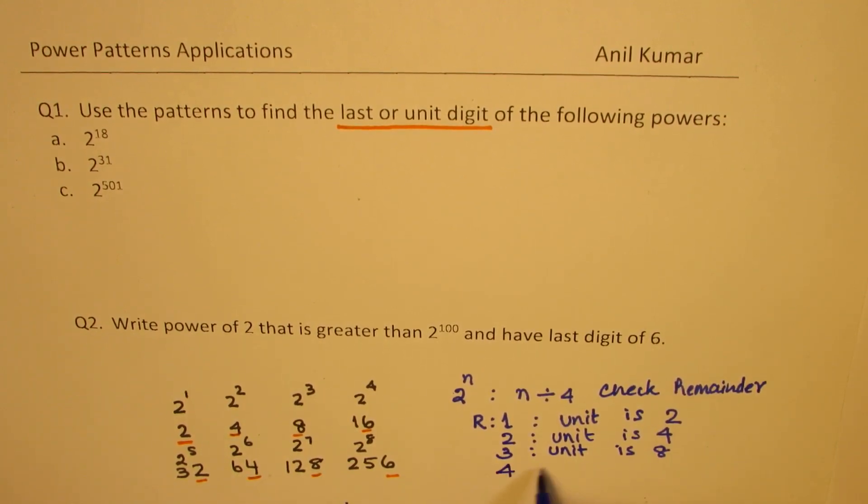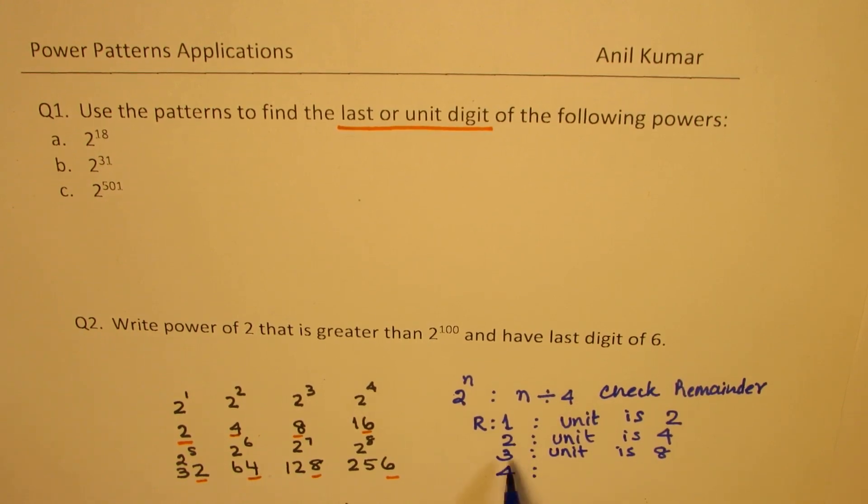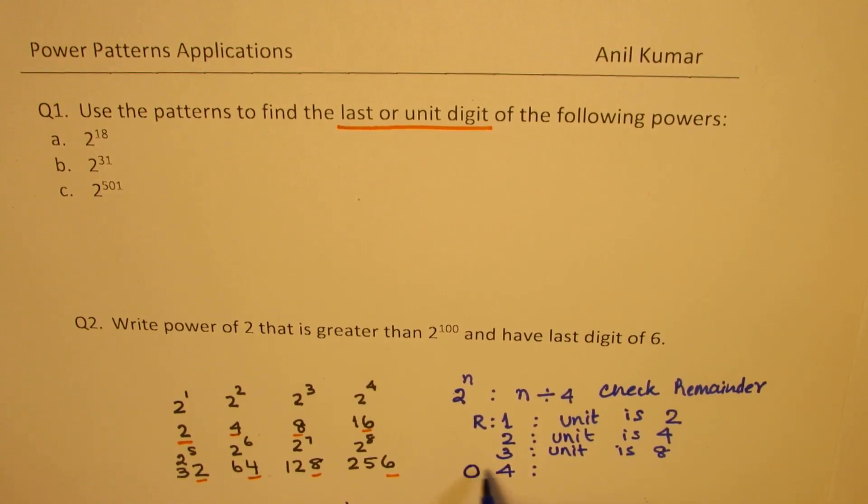If the remainder is 4, now can the remainder be 4? You are dividing by 4. So, remainder cannot be 4. So, 4 divided by itself will be 0. So, I should write this as 0. So, if the remainder is 0, that is, if it is a multiple of 4, then the unit is 6. So, that is the pattern which is being followed. We have to use this pattern rule to answer our question.